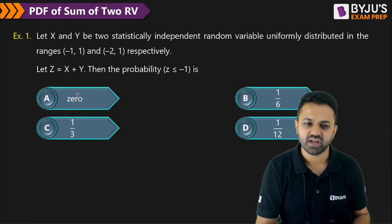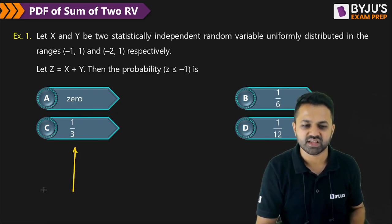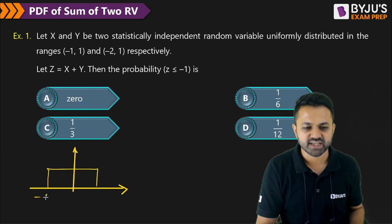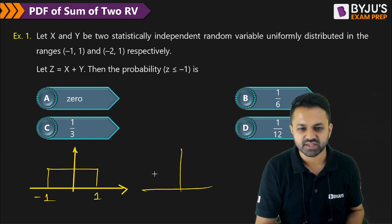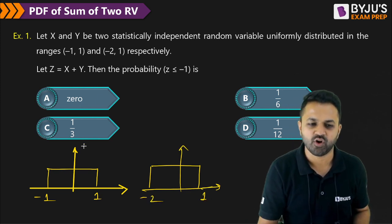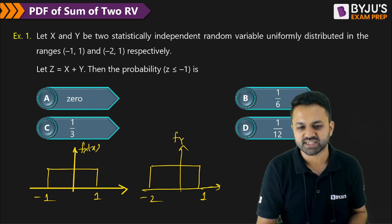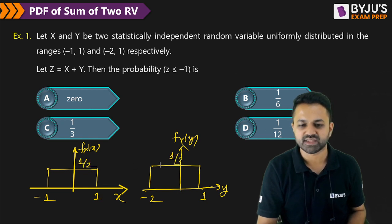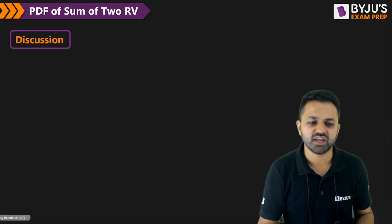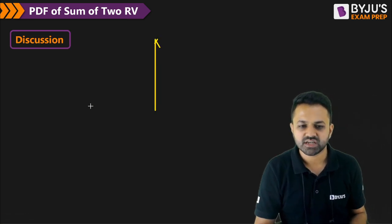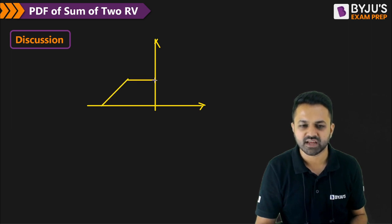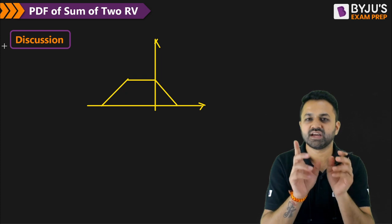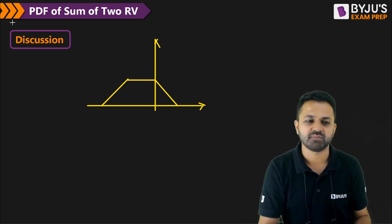Now let's look at another example where we have two pulses with unequal width. The concept is the same: one pulse goes from minus 1 to 1, and the other from minus 2 to 1. You still use the same concept — you convolve these two signals, f_X(x) and f_Y(y). Because the widths are unequal, the resulting shape will be trapezoidal. That is the key trick: when two unequal-width pulses are convolved, the result is trapezoidal.